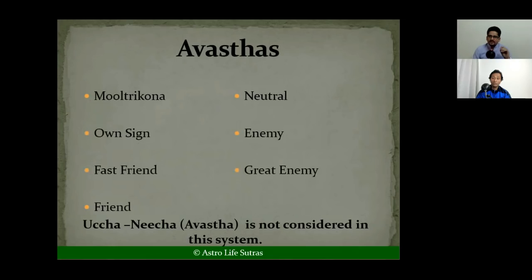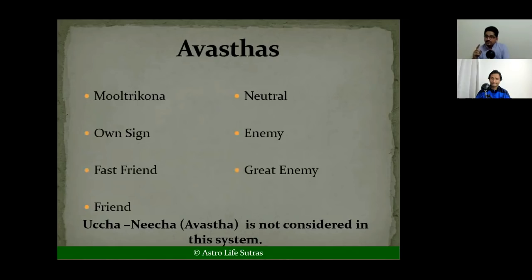For example, Mars becomes exalted in Saturn's sign, but Mars and Saturn are not friends. So according to this system, Mars will not get good marks in Vimshopak Bala even if it is exalted in D1. Another example: Venus is debilitated in Mercury's sign Virgo — but because we are not considering Uccha-Neecha here, and Mercury is a natural friend of Venus, Venus will actually attain a good score in Vimshopak Bala even after debilitation. It will obtain more score in Virgo than in Pisces.